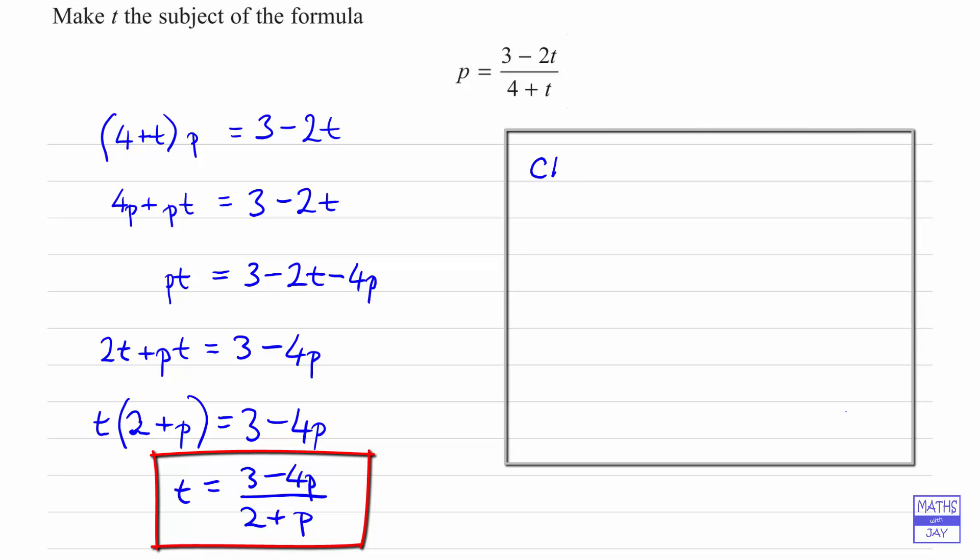So I'm going to choose, let's think, we don't want to make life too complicated, we can choose anything really for t, so let's choose t as 5. So what we're going to do is work out what p would be if t is 5.